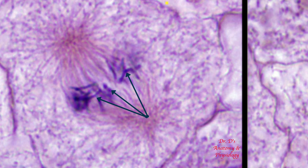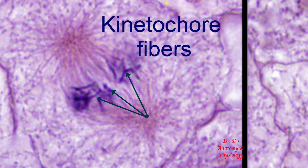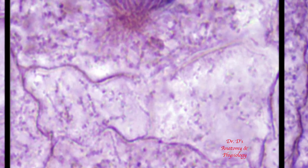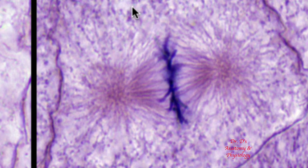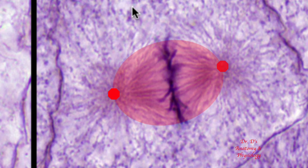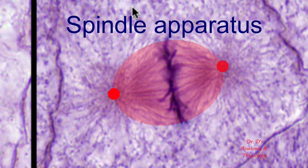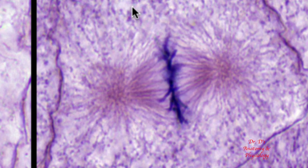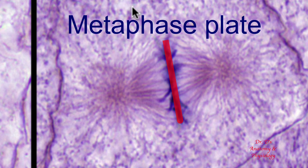These microtubules are called kinetochore fibers or microtubules. Here is a cell at a later stage of metaphase. Note that the chromosomes are diametrically opposed and the fibers extending from each form an ellipsoid shape as they extend to the chromatids. This configuration of fibers is called the spindle apparatus. At this point, the attached chromatids have moved to the center of the cell and are arranged like a disc or flat plate. This is called the metaphase plate, which is characteristic of metaphase. Because it occupies the wide center of the spindle apparatus, it is also called the equatorial plate.